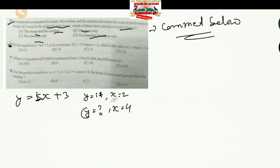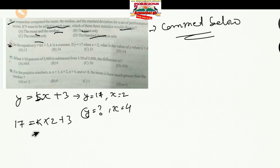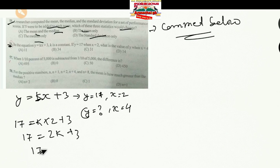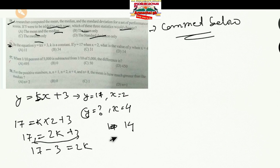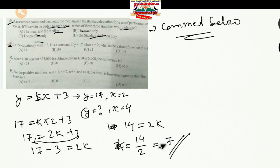Substituting Y = 17 and X = 2: 17 = K(2) + 3. By order of operations, multiplication first: 17 − 3 = 2K, so 14 = 2K. Dividing both sides by 2, K = 7.